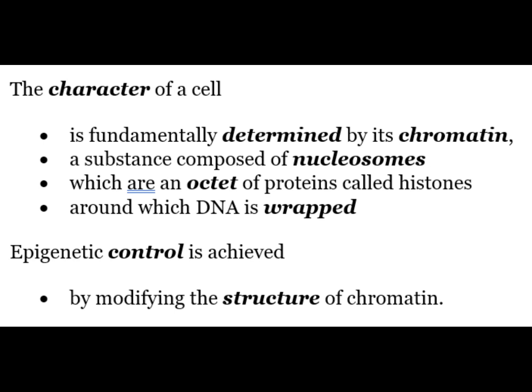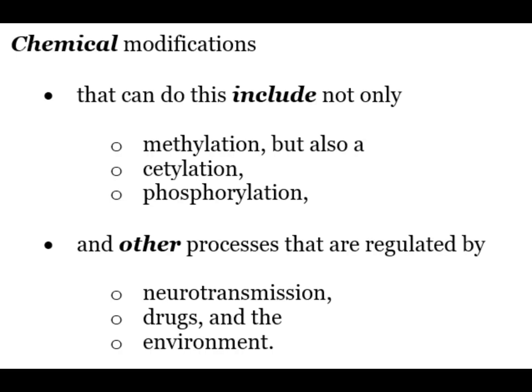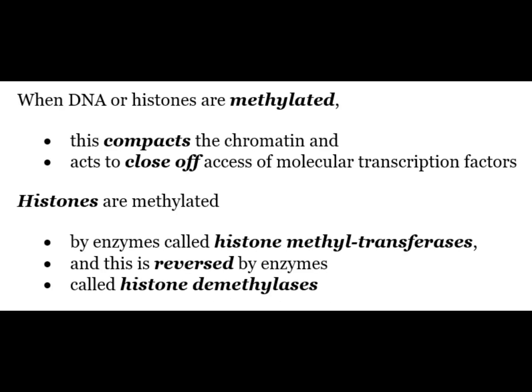Epigenetic control is achieved by modifying the structure of chromatin. Chemical modifications that can do this include methylation, acetylation and phosphorylation and other processes that are regulated by neurotransmission, drugs and the environment. When DNA or histones are methylated, this compacts the chromatin and acts to close off access to molecular transcription factors. Histones are methylated by enzymes called histone methyltransferases, and this is reversed by enzymes called histone demethylases.